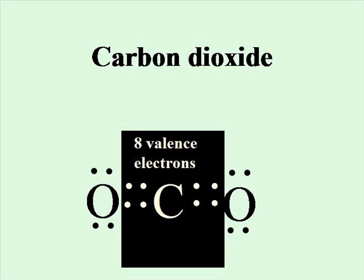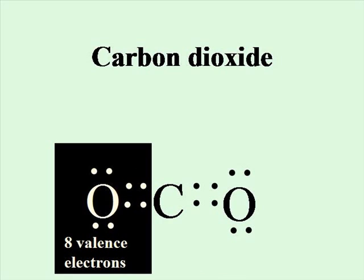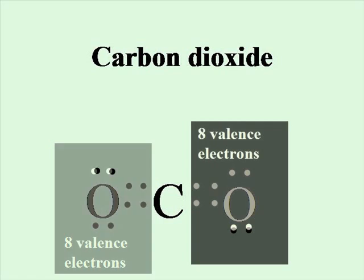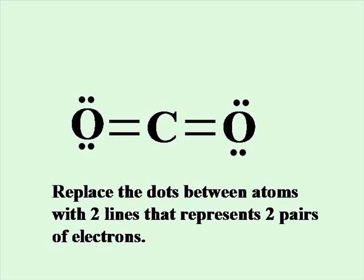This is what we mean when we say atoms will not form multiple bonds unless they have to — in this structure, you have to. You can see that the central carbon has eight electrons around it, and each oxygen has eight electrons around it as well. By using this arrangement, each atom has an octet of electrons and you haven't used more than the 16 available valence electrons. Each pair of electrons between the carbon and oxygen is shown as a line, so since you're sharing four electrons, you have two lines showing a double bond.